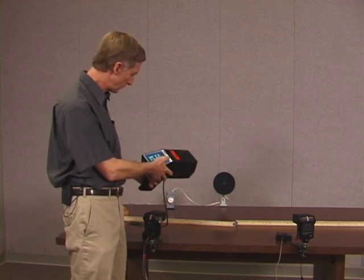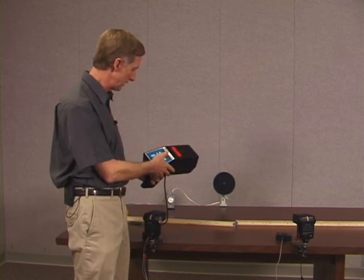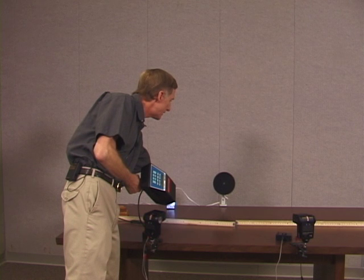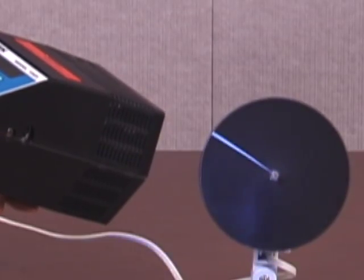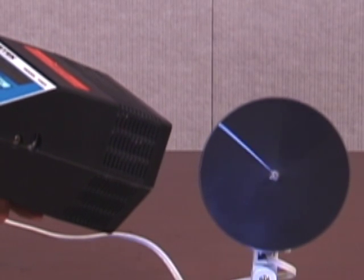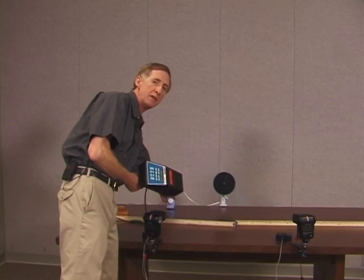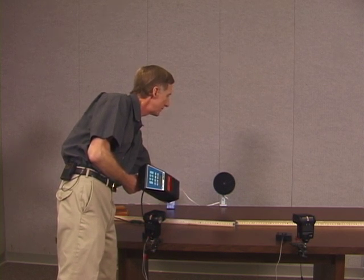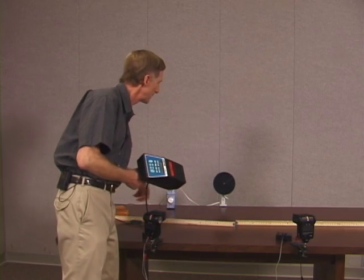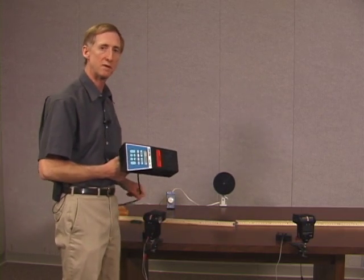I'm going to set the stroboscope for a frequency of 50 flashes per second because I want to make the disc go around 50 times per second. I've got a variable speed control here and I'll adjust that. And I get, that should be pretty nearly 50 rotations per second. That's a little bit different, but it's close enough for what we're doing here. It'll change slightly.